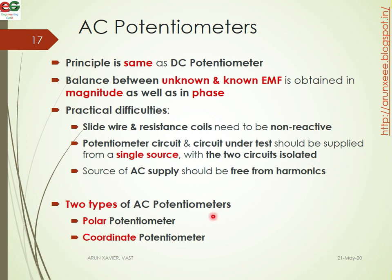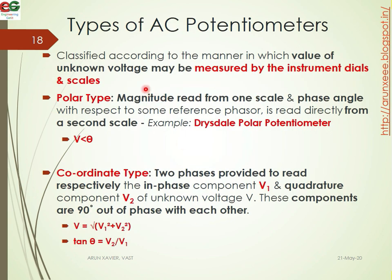There are two types of AC potentiometers: polar potentiometers and coordinate potentiometers. This classification is according to the manner in which the value of the unknown voltage may be measured by the instrument dials and scale.